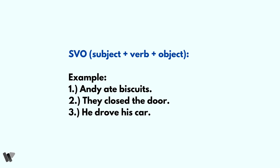Let's look at some examples of the SVO structure. Number one: Andy ate the biscuits. They closed the door. He drove his car. In the first example, 'Andy' is the subject — it is the name of a person. 'Ate' is the verb, and 'biscuits' is the object.